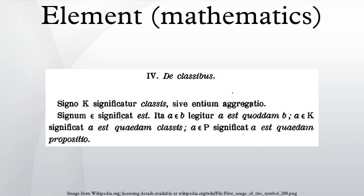Here he wrote on page X: 'Signum ∈ significat est. Ita a ∈ b legitur a est quoddam b', which means: 'The symbol ∈ means is. So a ∈ b has to be read as a is a b.' Thereby ∈ is a derivation from the lowercase Greek letter epsilon and shall be the first letter of the word ἐστί, which means is.